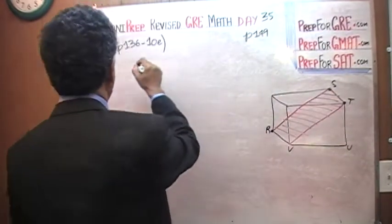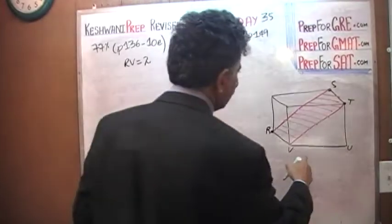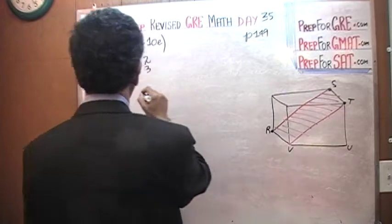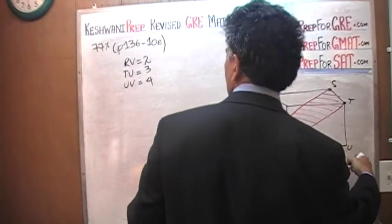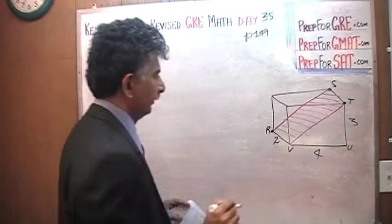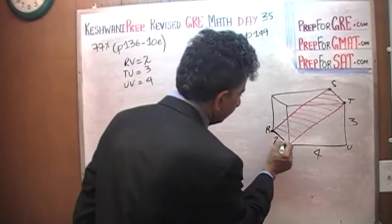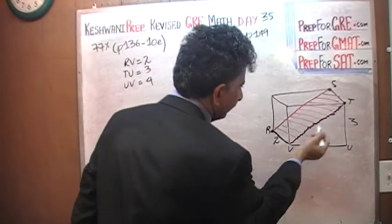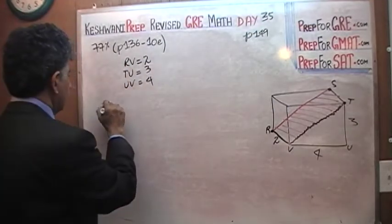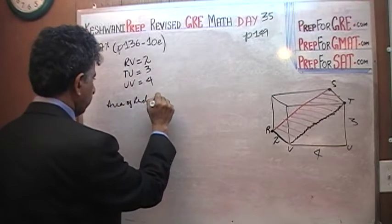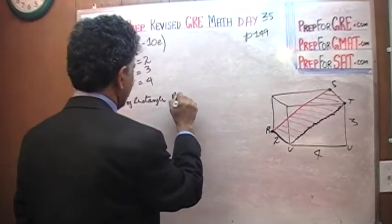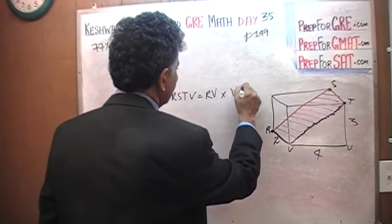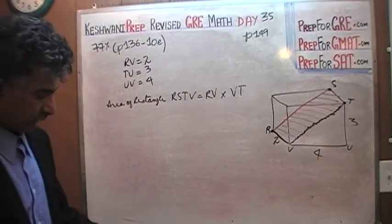R, S, T, U and V. We are told that R to V is 2. We are told that T to U is 3. We are told U to V is 4. U to V is 4, T to U is 3, we are told R to V is 2 so we know one side of the rectangle. We know the length of this side. We have to find this side right here. How do we find out the length of this side? Because if we know the length of T to V then the area of the rectangle RSTV is simply R to V which is this side times TV by simply using the Pythagorean theorem.